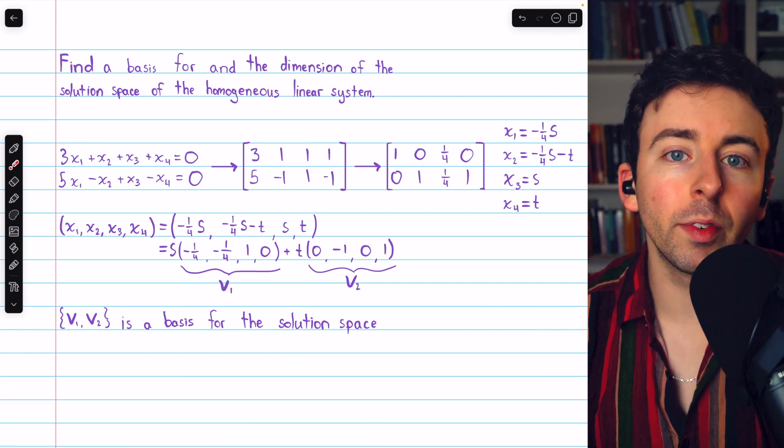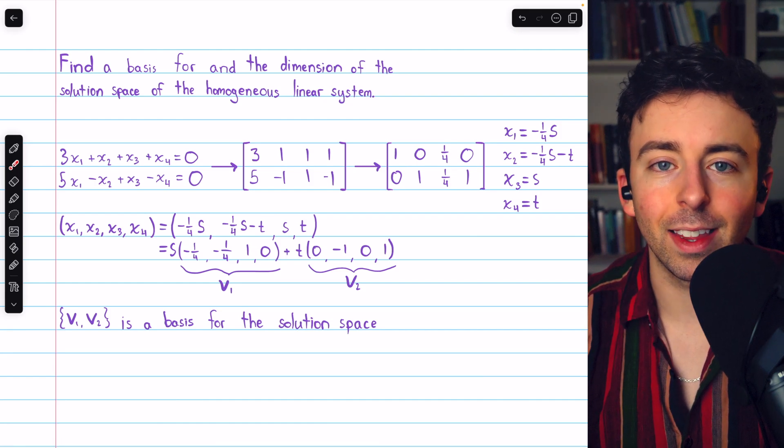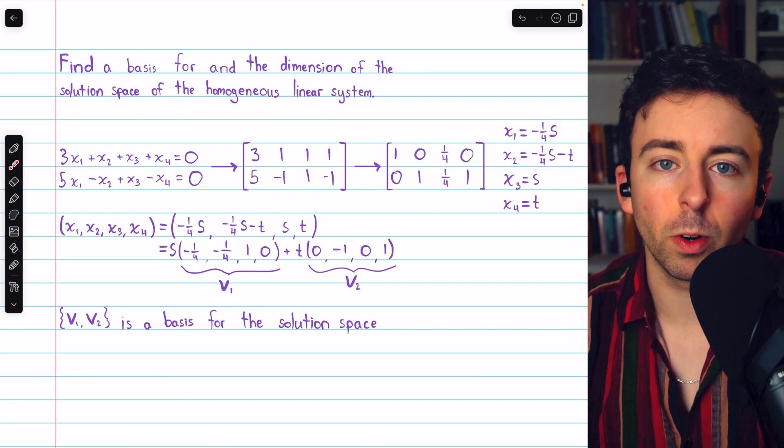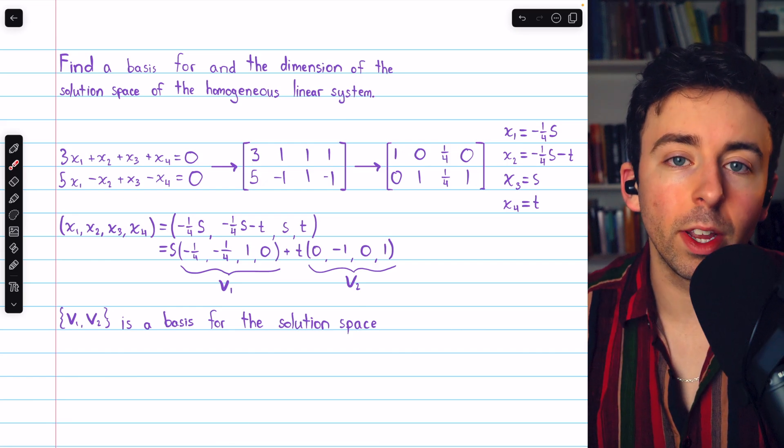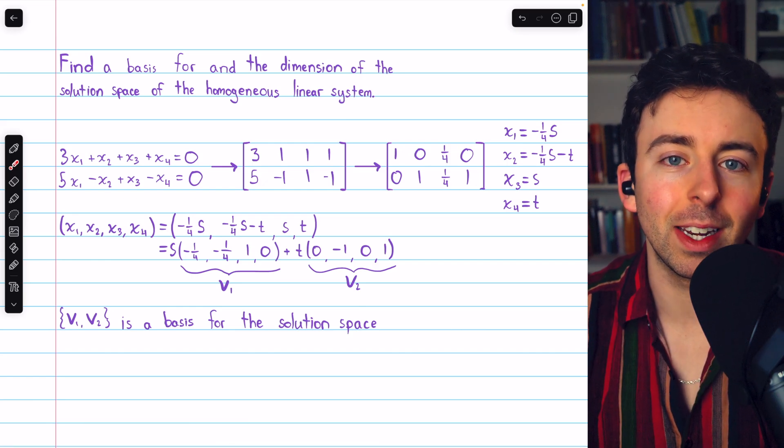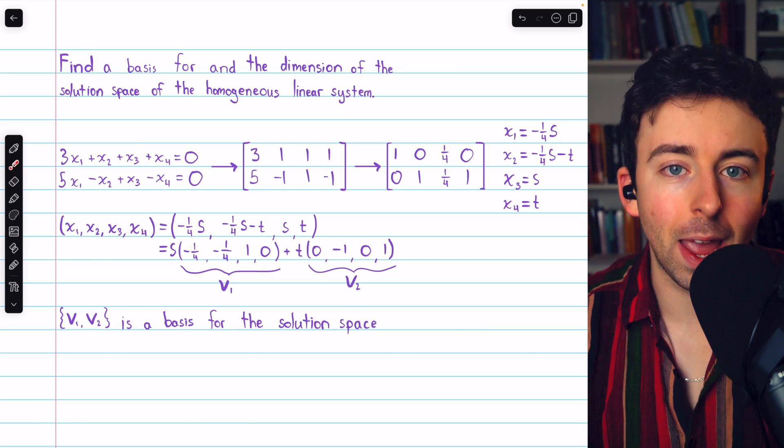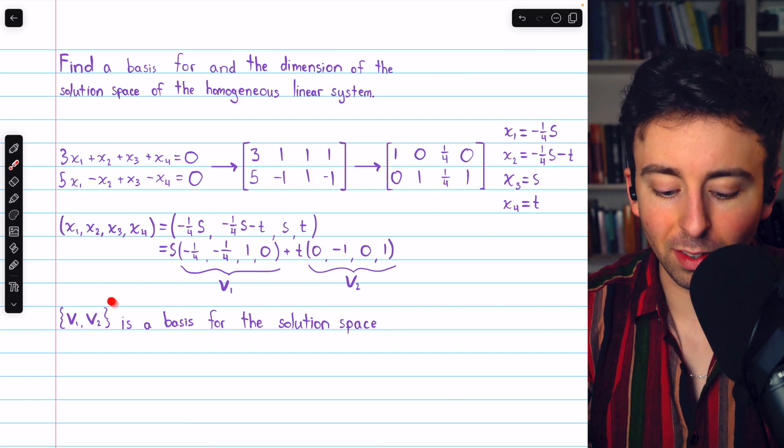But furthermore, solving a homogeneous linear system like this by putting the coefficient matrix into reduced row echelon form will always produce a linearly independent set of vectors that span the solution space. So, this is our basis.